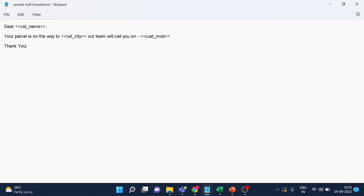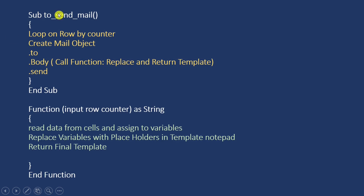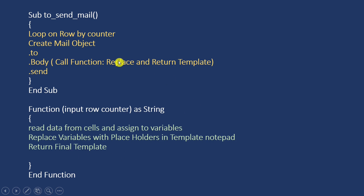Now let's understand how we will change the values. We already have the sub to send the email — we loop on each row by a counter, create the email object, create the body, and then send. What we have to do is create a function. This function will take the row counter, change all the placeholders with the cell values, assign those values to variables, add variables and placeholders into arrays, and then return the final template back to the calling code.